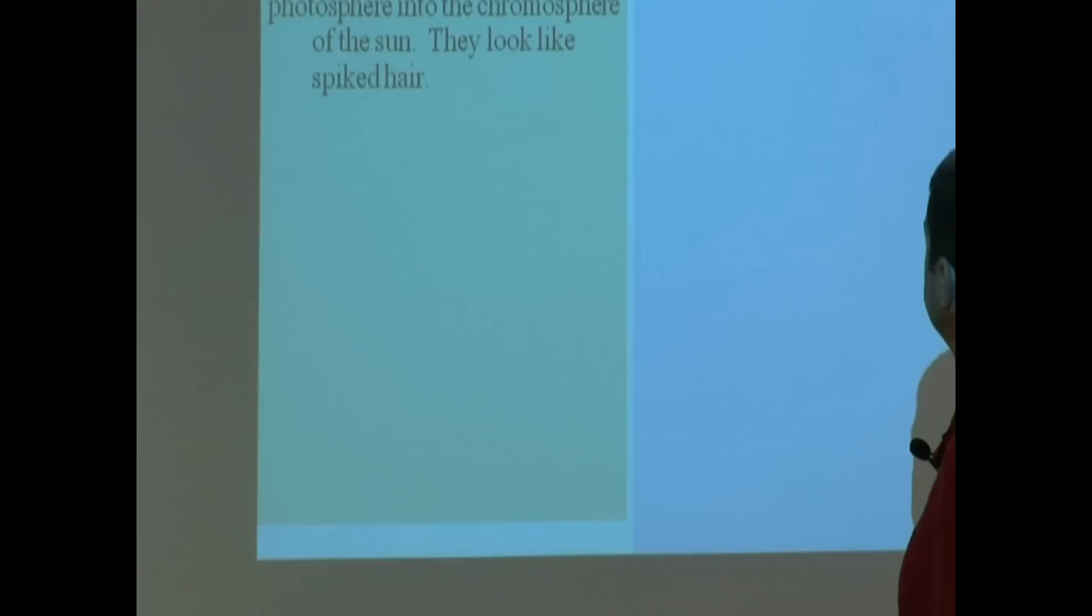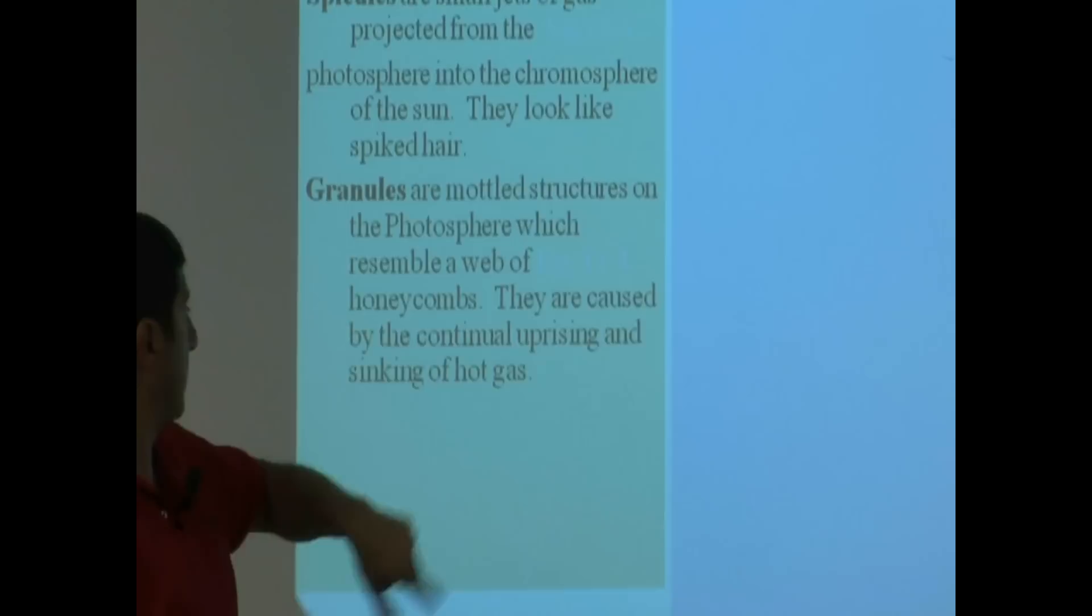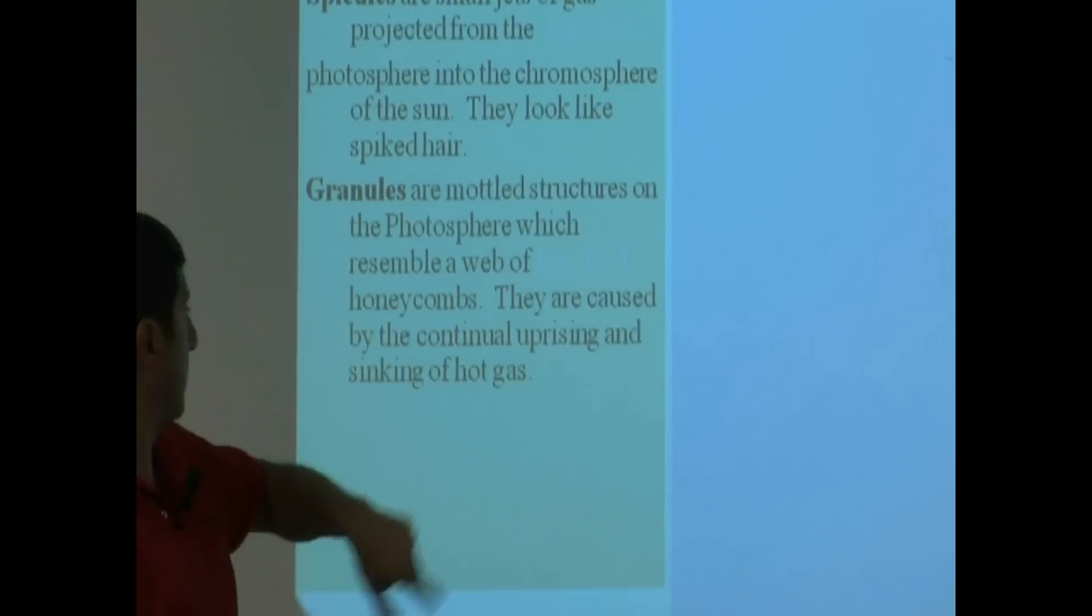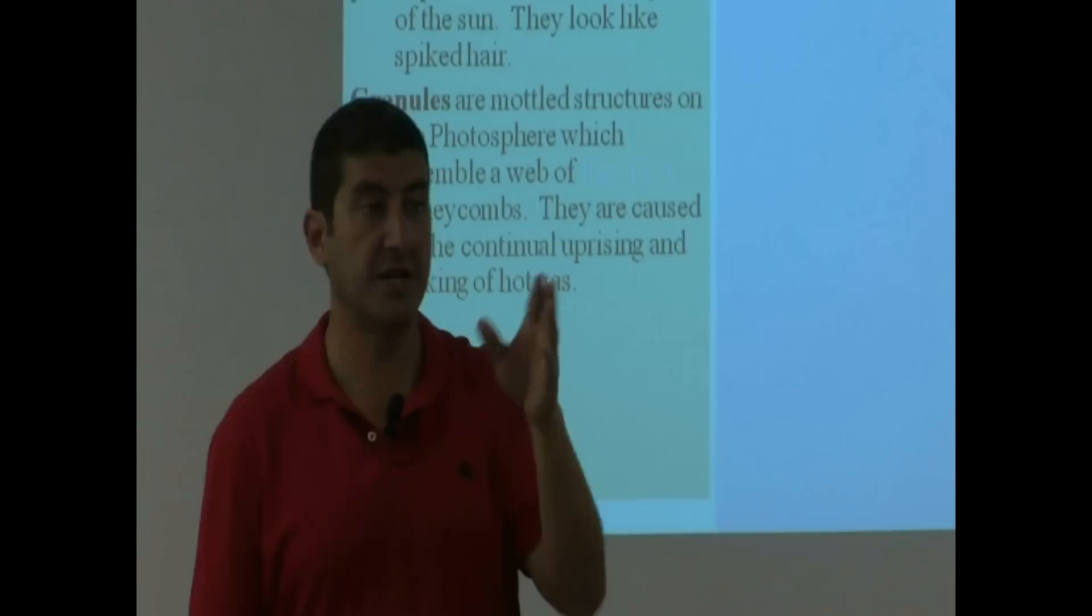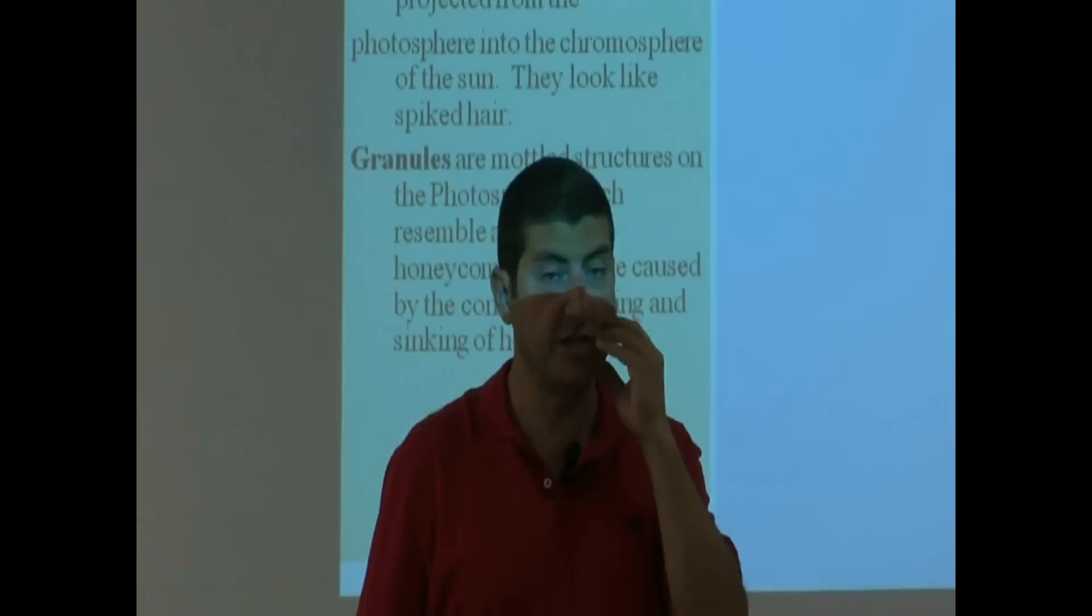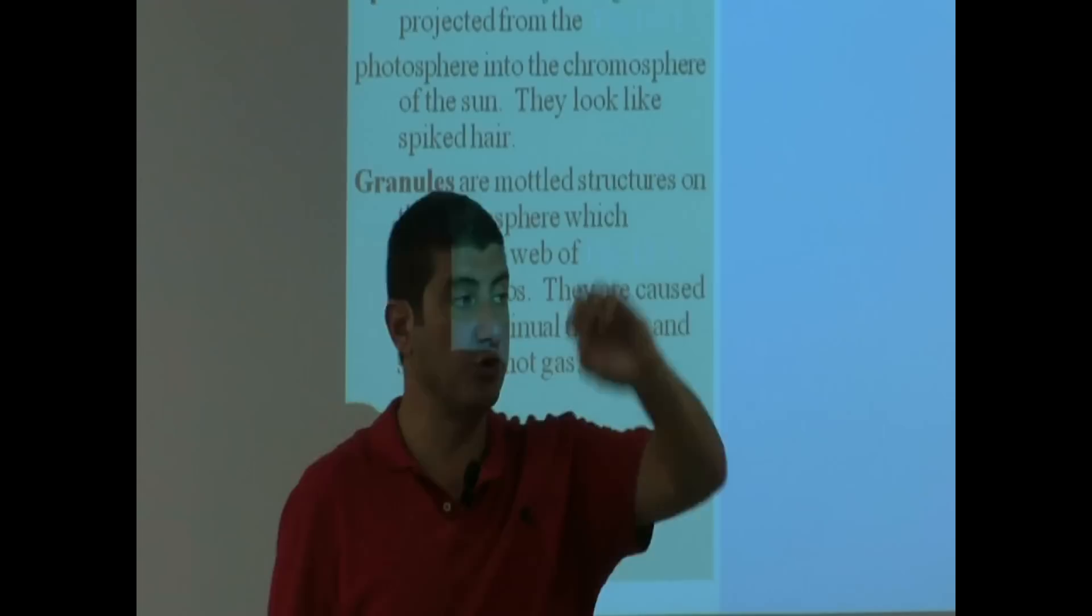Granulation. Granules are mottled structures on the photosphere which resemble a web of honeycombs. They are caused by the continual uprising and sinking of hot gas. Basically, what I compare granulation to is like the skin of our face. When you look at our face from very far, our face might look very smooth and nice. And when you look very up-close, especially if you hold a magnifying lens or a mirror, you see there are surface features on your skin that are very grainy. The sun is similar, too. From the outside, it looks very smooth. When you get close, there's activity taking place there.